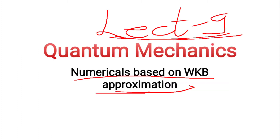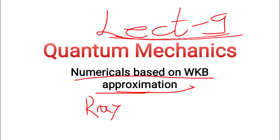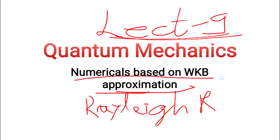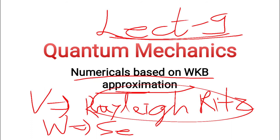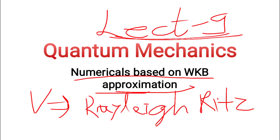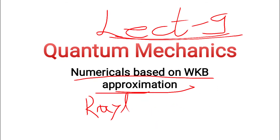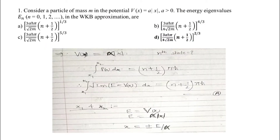One more thing from last lecture: the variational principle is called the Rayleigh-Ritz method — that is the name of the variational method, the Rayleigh-Ritz method. And WKB is called semi-classical. This will also come in theory-based MCQ questions. Now let's go to the numericals — first numerical.